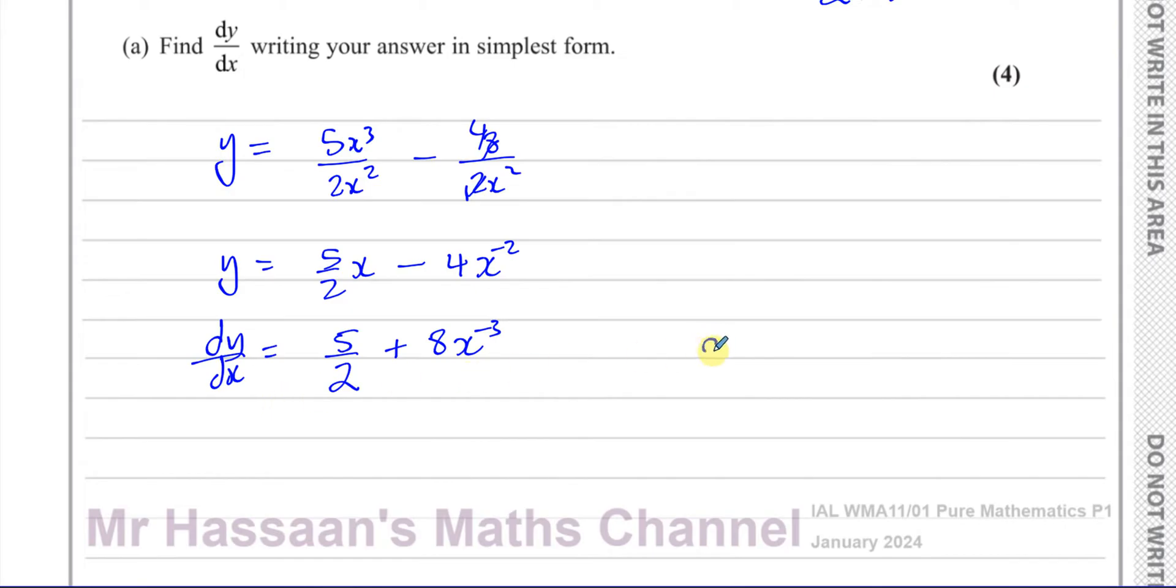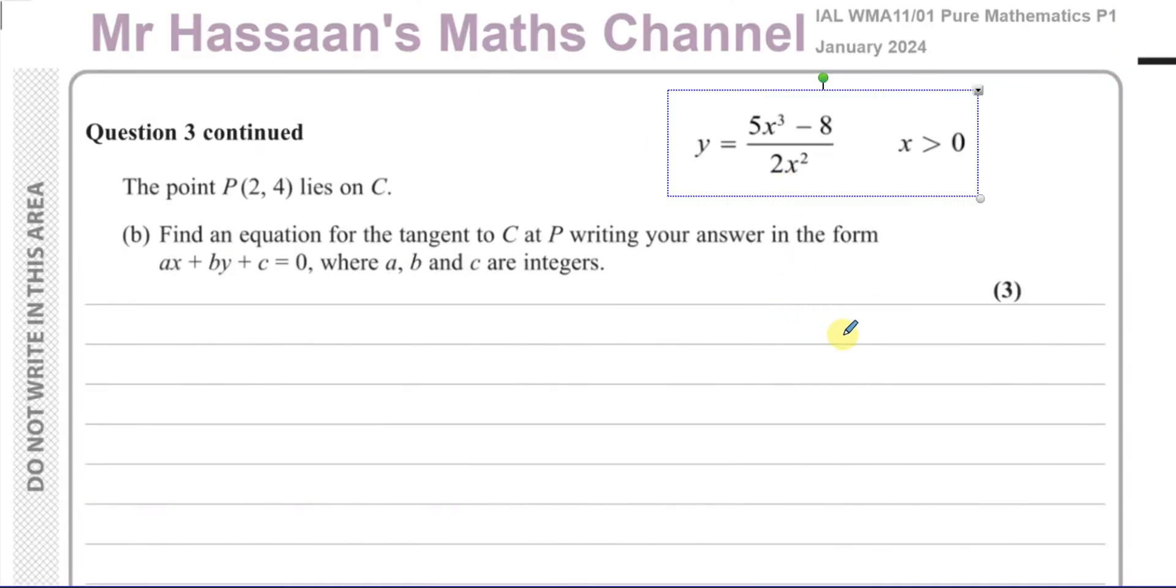We can leave it like this. We can also write it as 5 over 2 plus 8 over x cubed. That's also fine. This is probably a better way to write it if you're going to substitute something in, which I think we're going to do. So I'm just going to go to part B now. So we know that dy/dx was 5 over 2 plus 8 over x cubed.